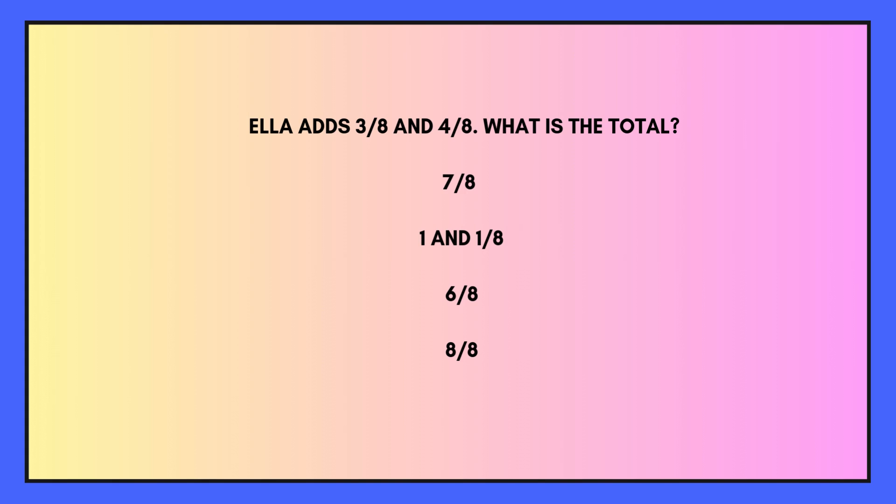Ella adds 3 eighths and 4 eighths. What is the total? So all you need to do is add up the numerators and keep the same denominator. Your options are 7 eighths, 1 whole and 1 eighth, 6 eighths, or 8 eighths.